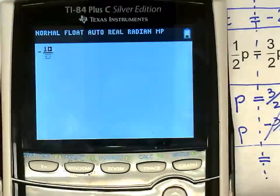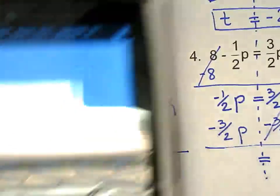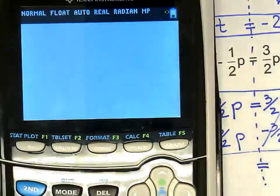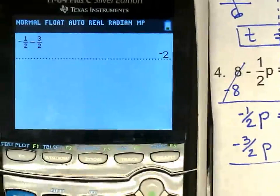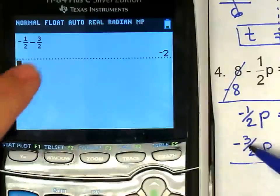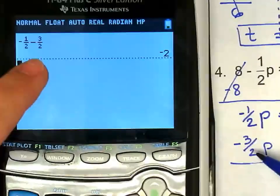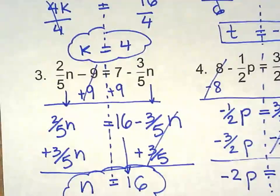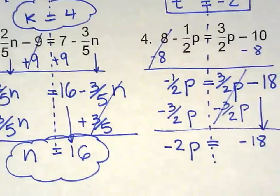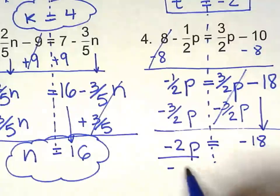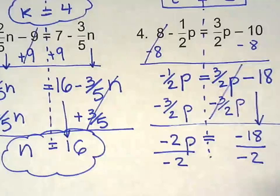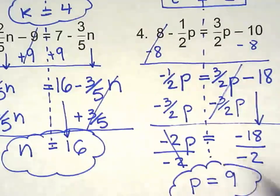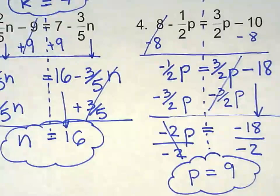Negative 1 over 2p. These two is 0. Negative 1 over 2 minus 3 over 2p. That will give me negative 2p. Bring negative 18 down. Divide both sides by negative 2. p equals positive 9. Because 2 negatives make a positive.